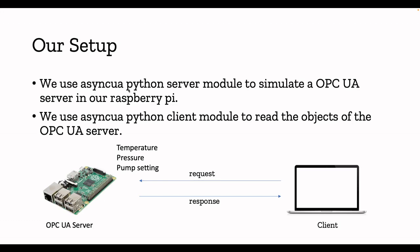We're going to use the asyncua Python module — it's an asynchronous module and much faster than the previous OPC UA Python module. The OPC UA server will run on our Raspberry Pi, and the client will run on my personal laptop, though you can use another Raspberry Pi as the client too. It's essentially a server-client concept.